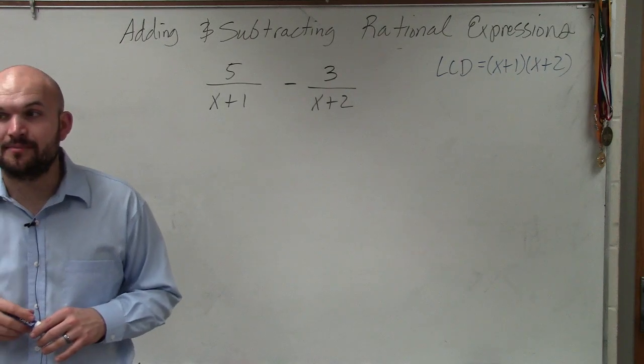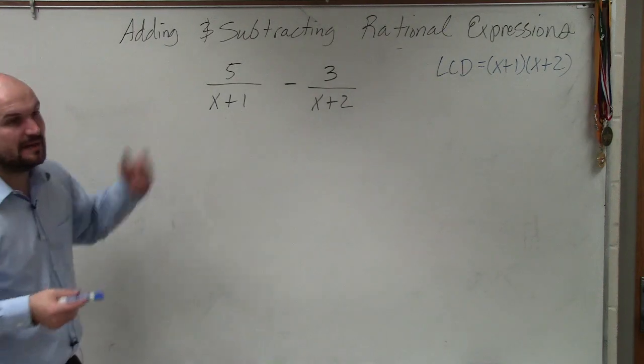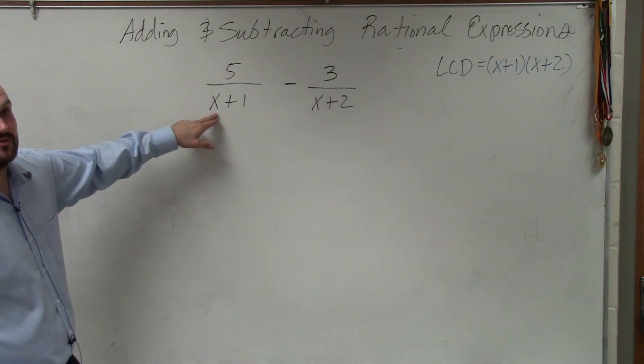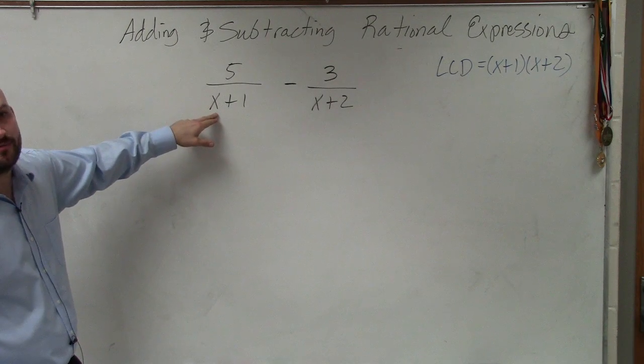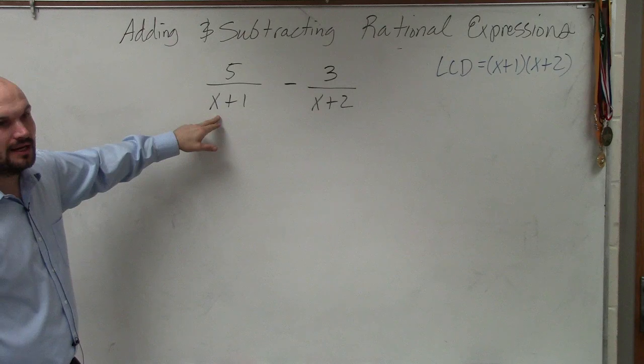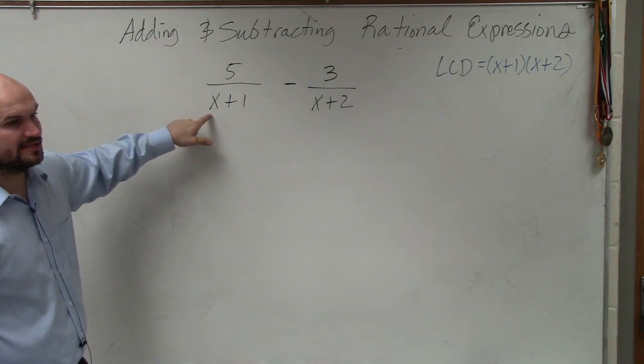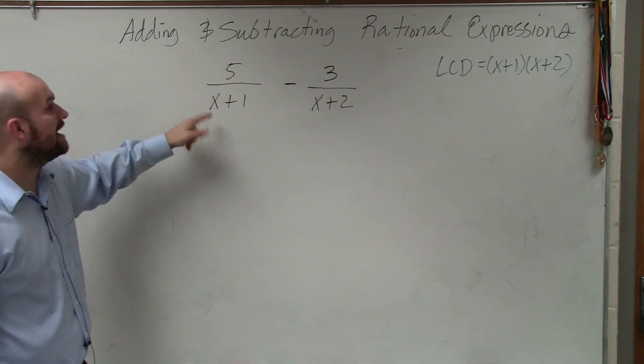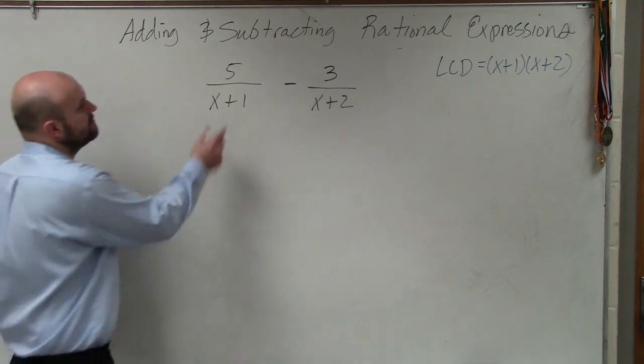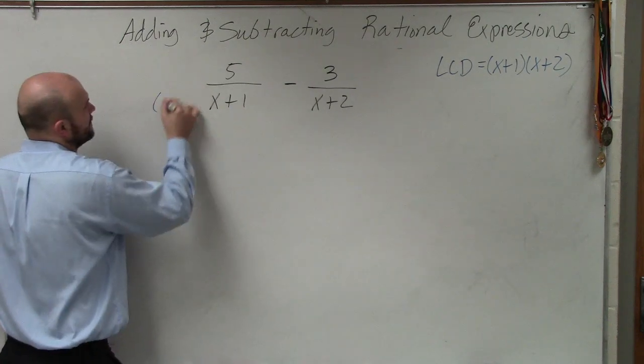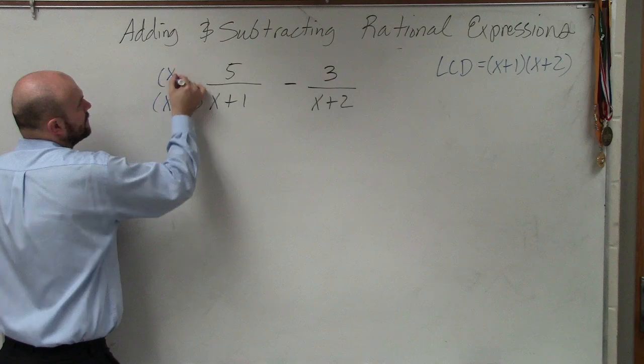Now, just like I did with the numbers, I'm going to get common denominators. So to get x plus 1 to be x plus 1 times x plus 2, I have to multiply by x plus 2. What do I need to multiply by to get it to there? x plus 2. Thank you. x plus 2 over x plus 2.